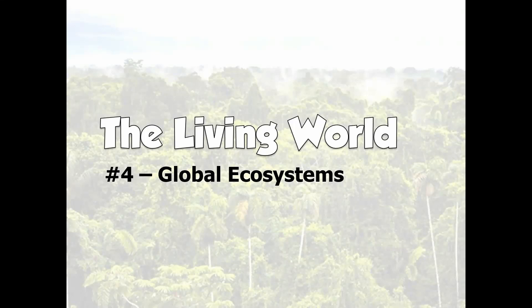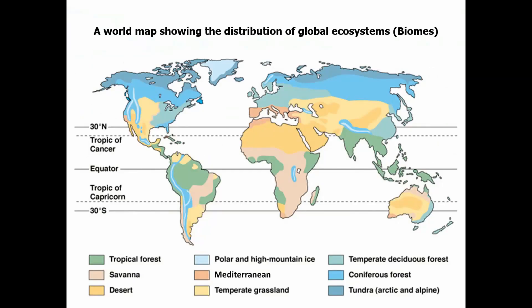This video looks at different global ecosystems, or what we call biomes. We have a map showing the distribution of global ecosystems across the planet, which might appear to be in quite a random order. But as we'll see when we look more closely, the location of ecosystems is tied very closely to their climate, which depends ultimately upon their latitude. As you move away from the equator towards the North or South Pole, we find the same ecosystems at broadly the same latitudes around the world.